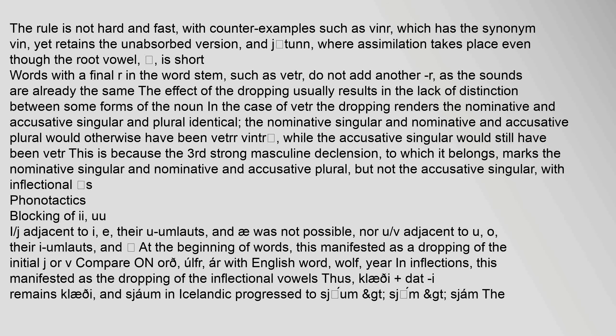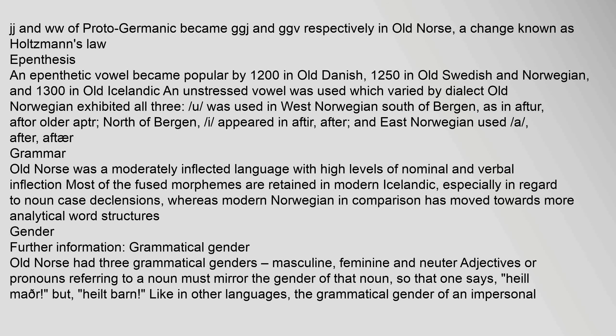Blocking of E, U-umlaut, and O at the beginning of words manifested as a dropping of the initial J or V — compare ulfr with English wolf, and ar with year. In inflections, this manifested as the dropping of the inflectional vowels. J and W of Proto-Germanic became GJ and GV respectively in Old Norse, a change known as Holtzmann's law. An epenthetic vowel became popular by 1200 in Old Danish, 1250 in Old Swedish and Norwegian, and 1300 in Old Icelandic. Old Norwegian exhibited all three variants: U was used in West Norwegian south of Bergen, I appeared north of Bergen, and East Norwegian used A.